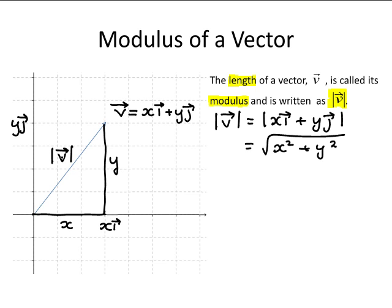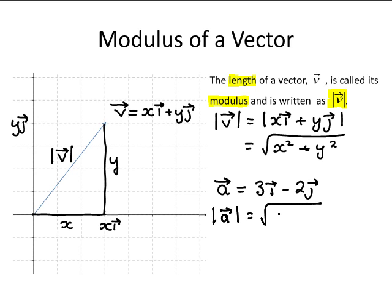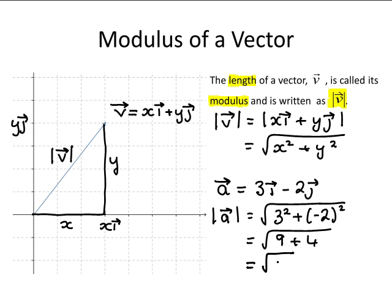Where the modulus of v is the hypotenuse. So for example, if you have a vector a equal to 3i minus 2j, the modulus of vector a is equal to the square root of 3 squared plus minus 2 squared, which is equal to the square root of 9 plus 4, which is equal to root 13.